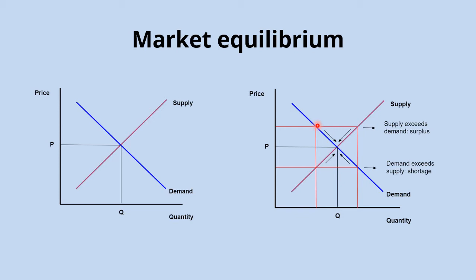A surplus is like the end of a season where a shop has leftover stock and looks to sell it off. That puts downward pressure on prices, and the lower prices incentivize more consumers to enter the market, increasing quantity demanded and pushing us back toward equilibrium. Similarly, if the price were below equilibrium, quantity demanded exceeds quantity supplied — creating a shortage — which puts upward pressure on prices, causing quantity demanded to fall due to the inverse relationship between price and quantity demanded.